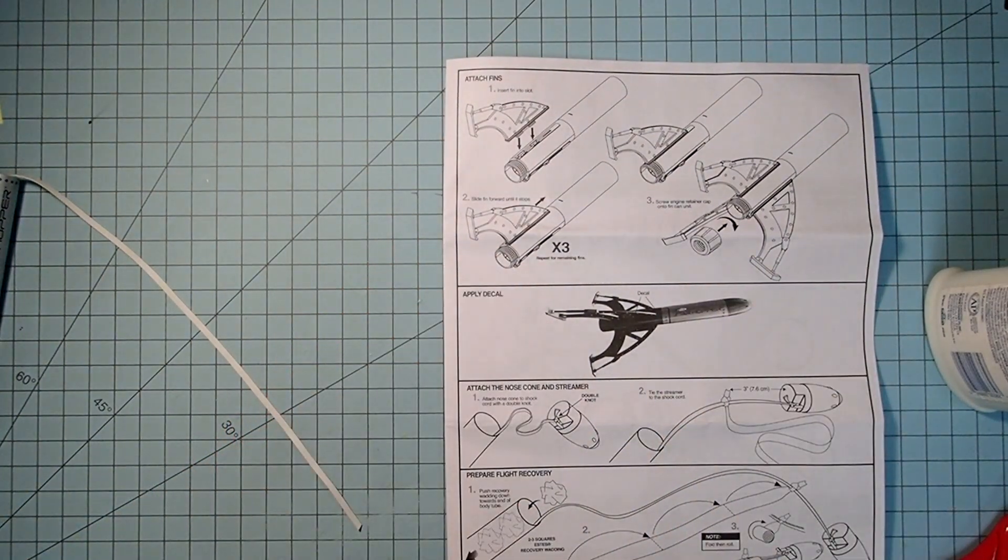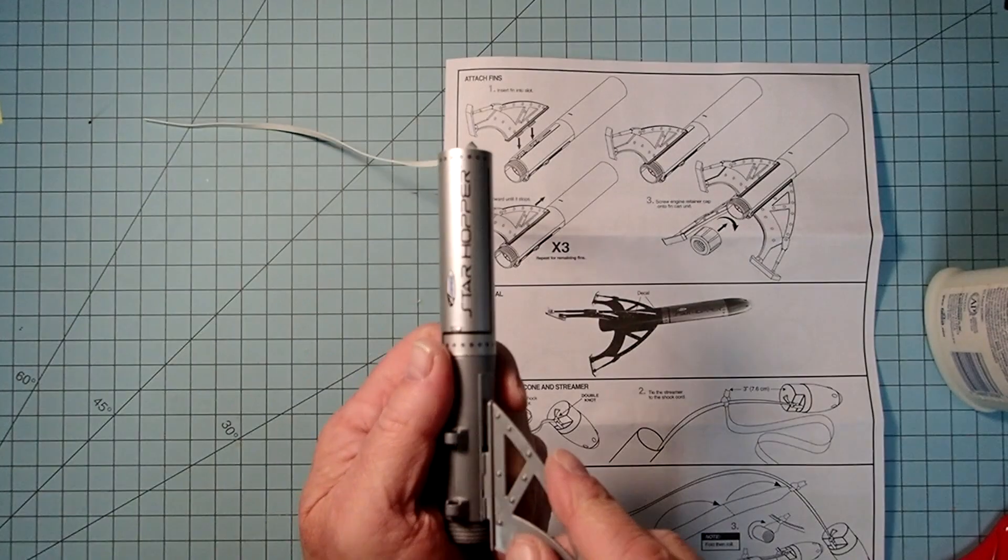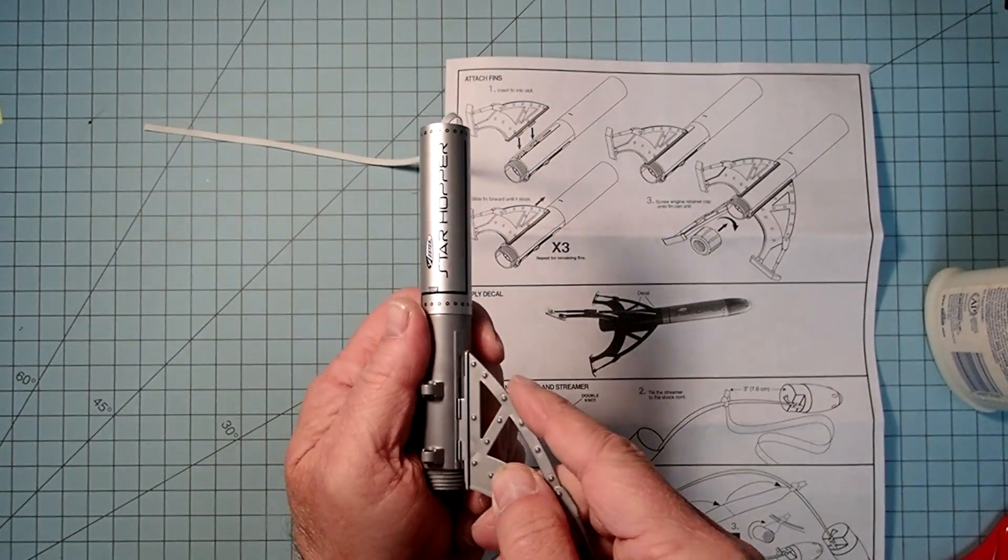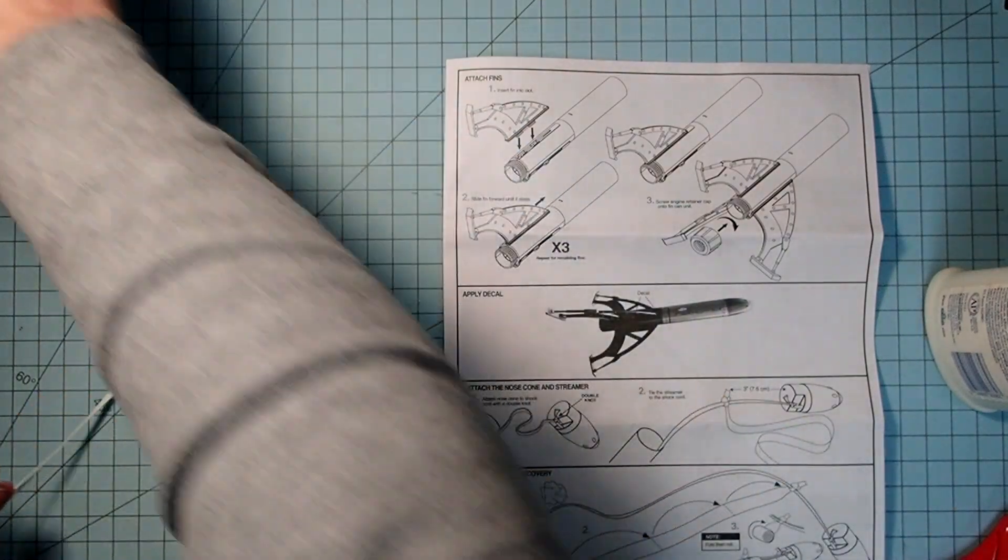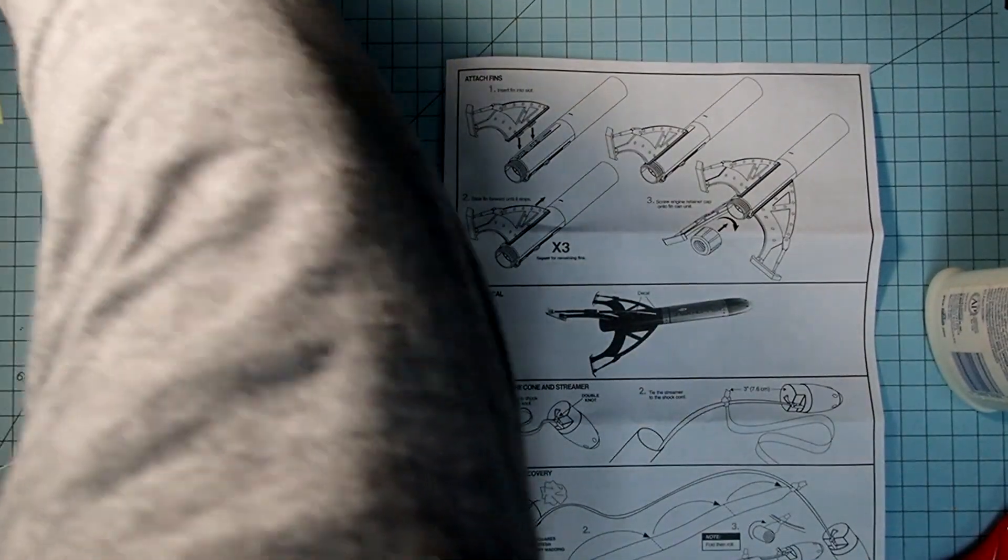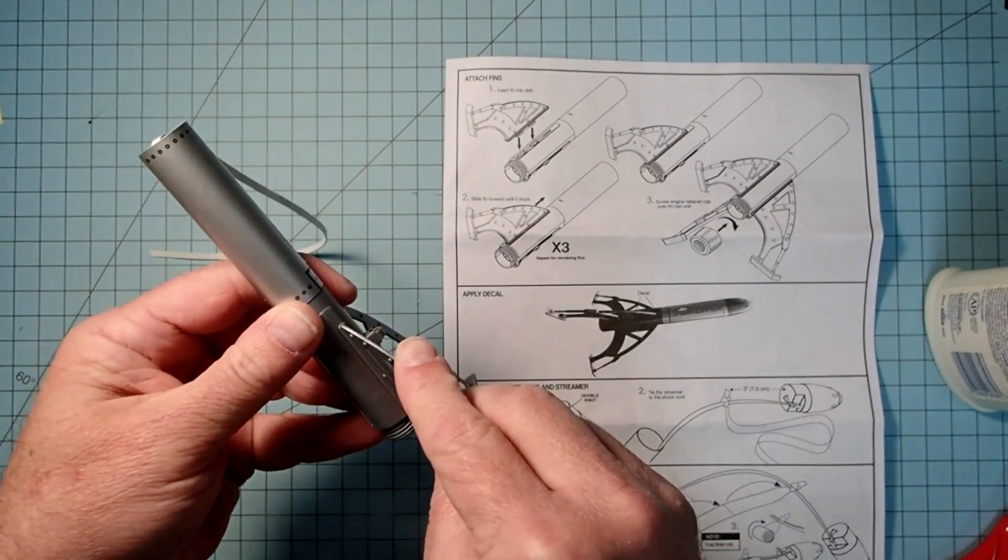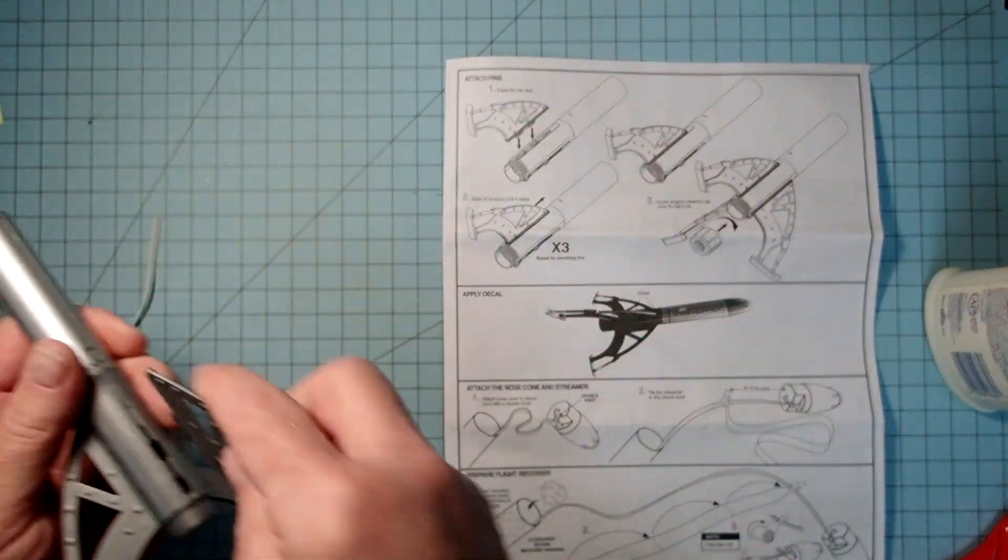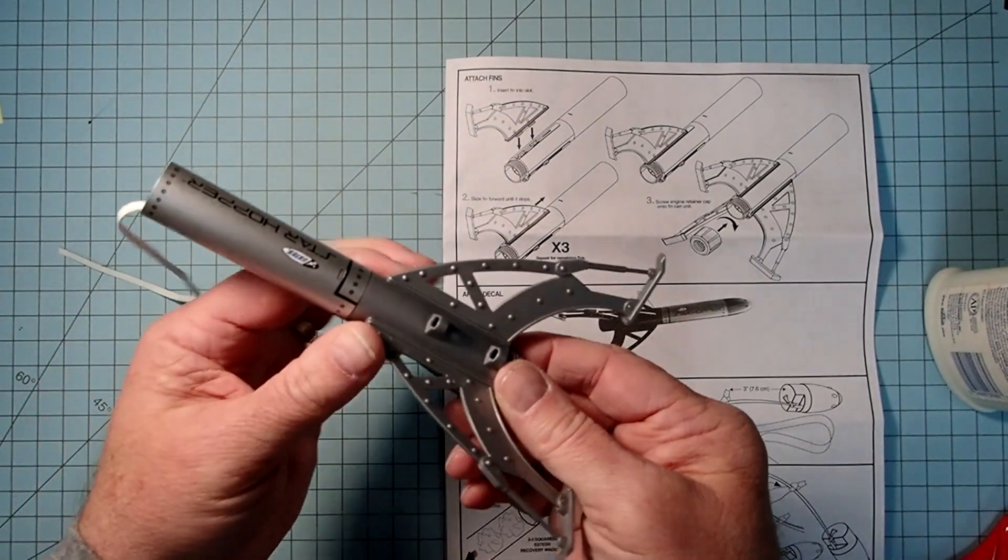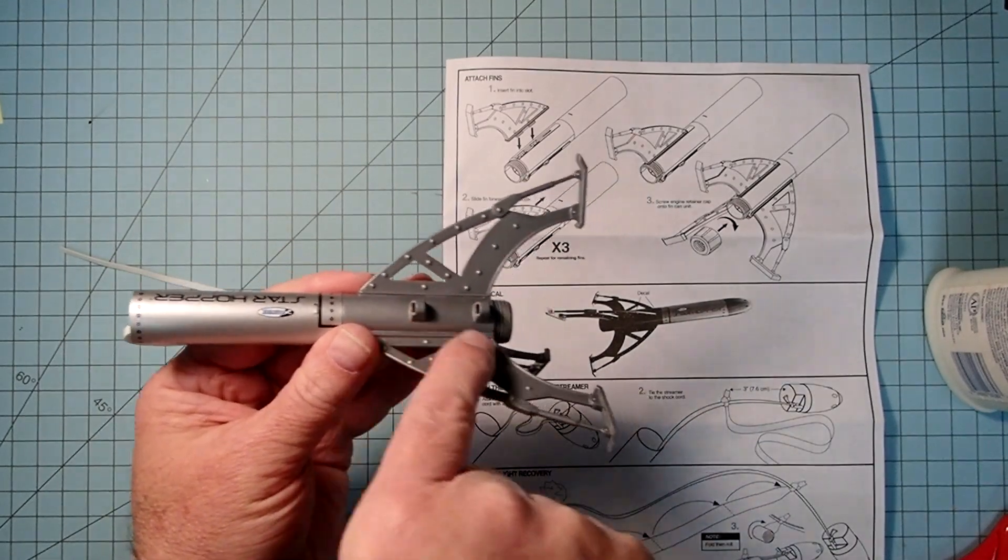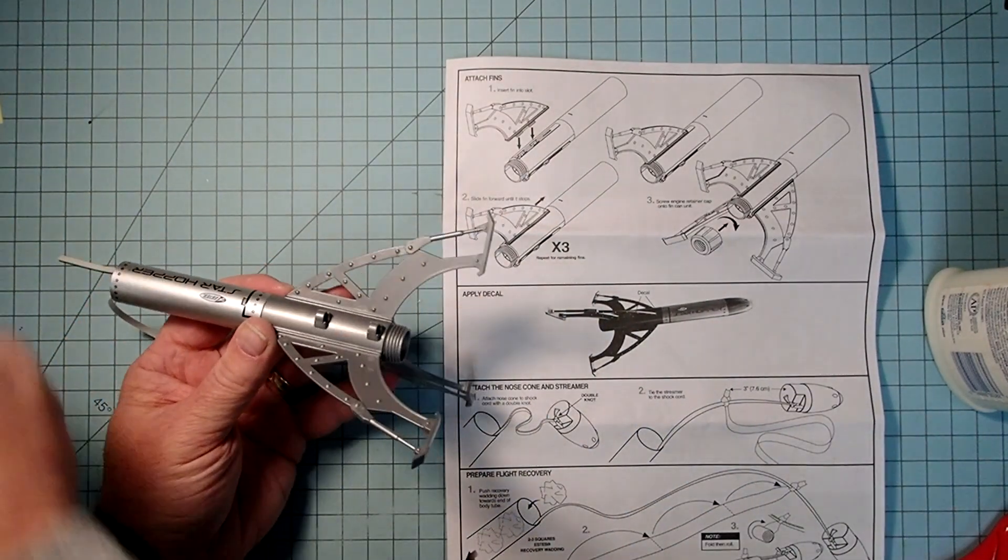Next we're going to put the fins on. Each one just snaps into these two holes and then you just push it forward. Now we're just going to do the same thing all the way around. Now note, the launch lugs are built into this so we don't have to add a launch lug to it.